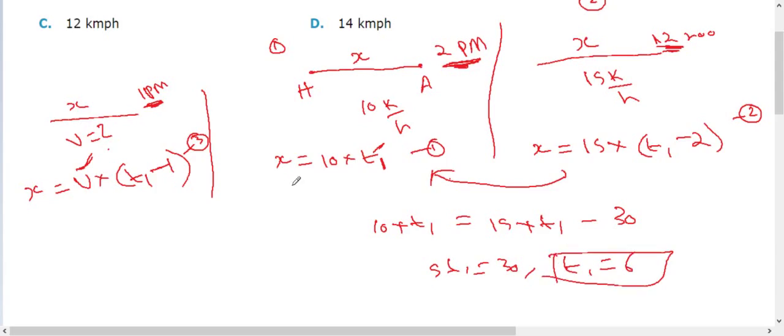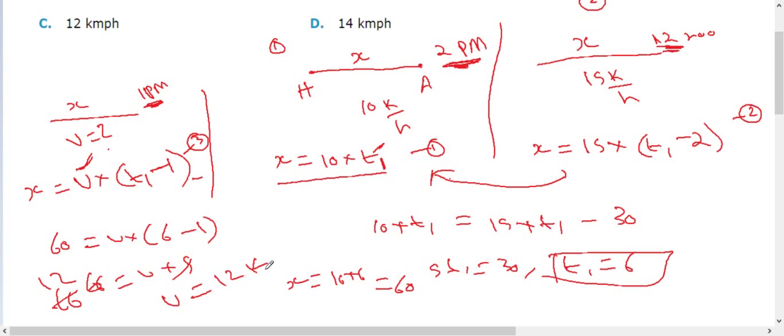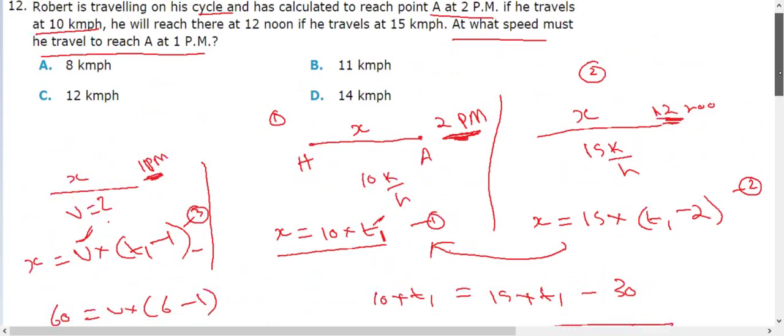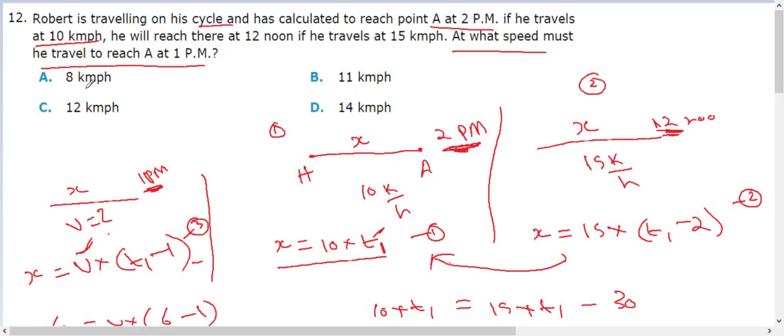T1 is 6, so from equation one, x equal to 10 into 6, that is 60. In equation three, 60 equal to V into 5, so V equal to 12 kilometers per hour. So that will be the answer for this problem, 12 kilometers per hour.